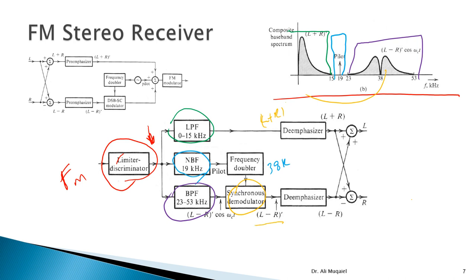After de-emphasis is applied, we have left plus right and left minus right. Adding them together gives two times the left channel, and subtracting them gives two times the right channel — just amplitude scaling, which is not a significant problem. This way we have separated the left from the right. If the same signal were fed to a monophonic receiver, it would only receive the combined signal with no stereo spatial effect. To test understanding, you should be able to sketch the transmitter and receiver from memory, or design the receiver given the transmitter.